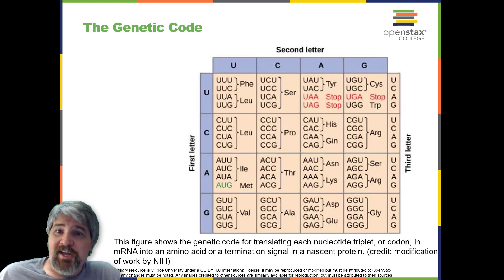The genetic code. To summarize what we know to this point, the cellular process of transcription generates messenger RNA, a mobile molecular copy of one or more genes with an alphabet of A, C, G, and uracil.